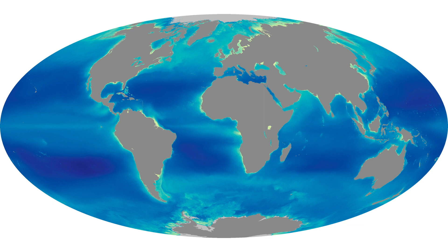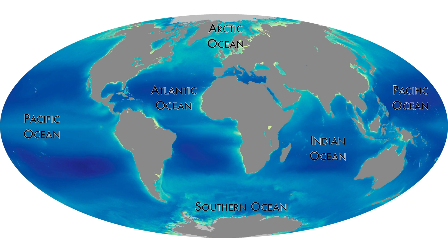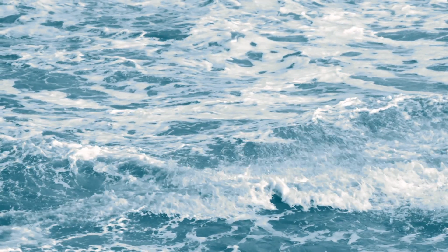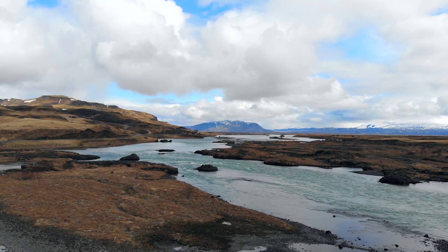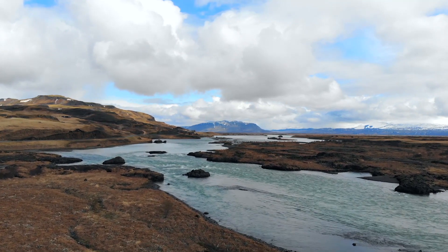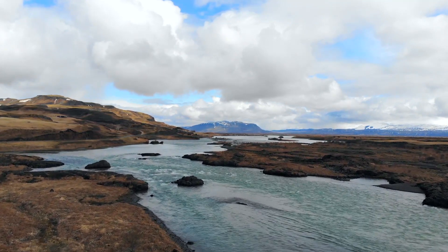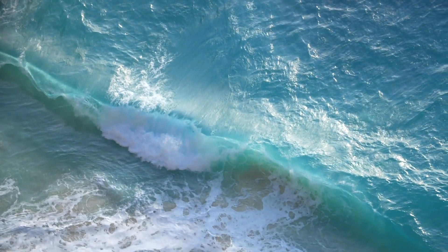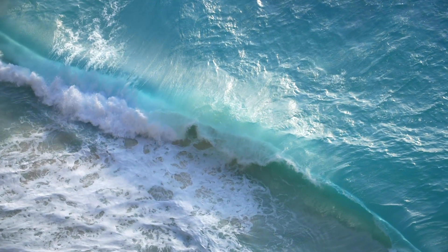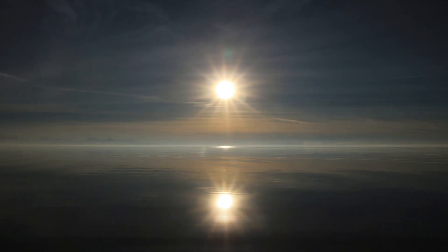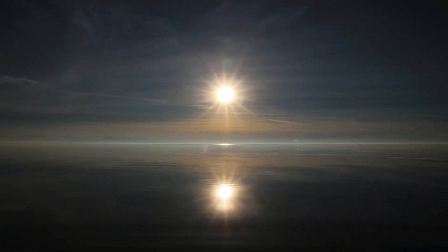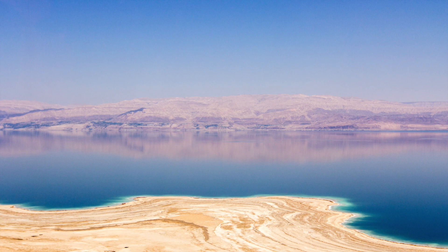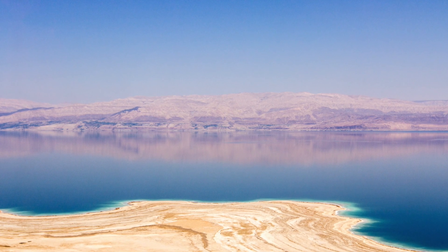Approximately 96.5% of Earth's water is found in its oceans — the Pacific, Atlantic, Indian, Arctic, and Southern oceans. Ocean water is saline or salty. As water from land flows through rivers down towards the ocean, it breaks down rocks and minerals along its journey. Among those minerals are salts that are easily dissolved in water. The world's oceans collect these salts and have become saline over billions of years. Another 1% or so of Earth's water can be found in other saline reservoirs, including landlocked lakes such as the Great Salt Lake and the Dead Sea, as well as underground saline aquifers.